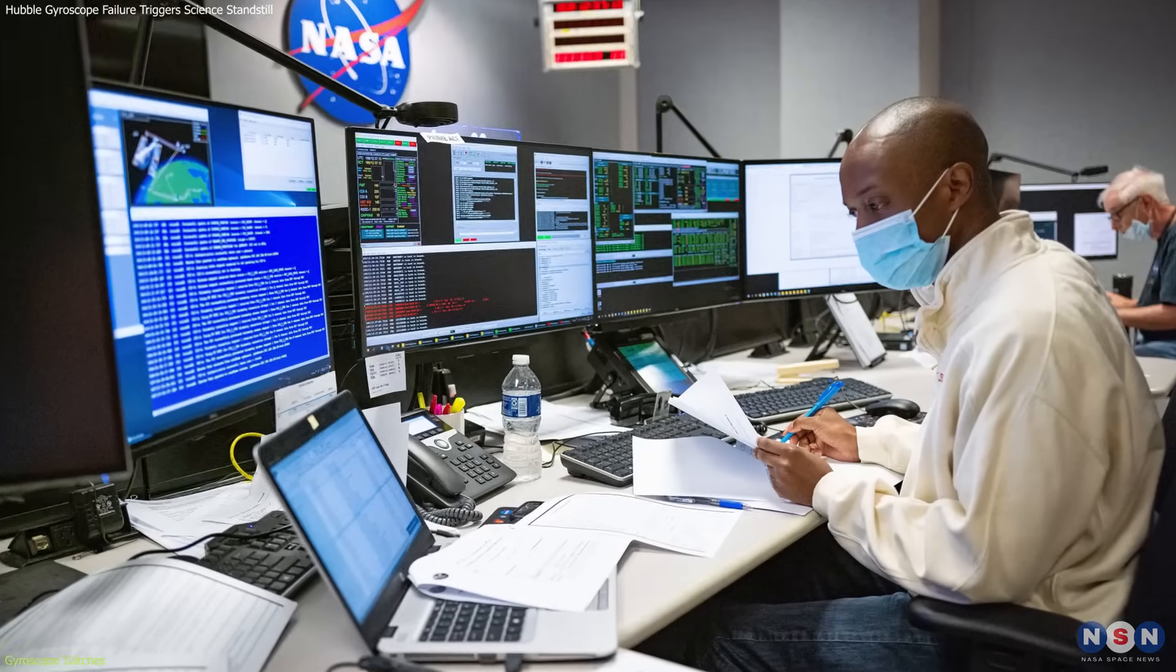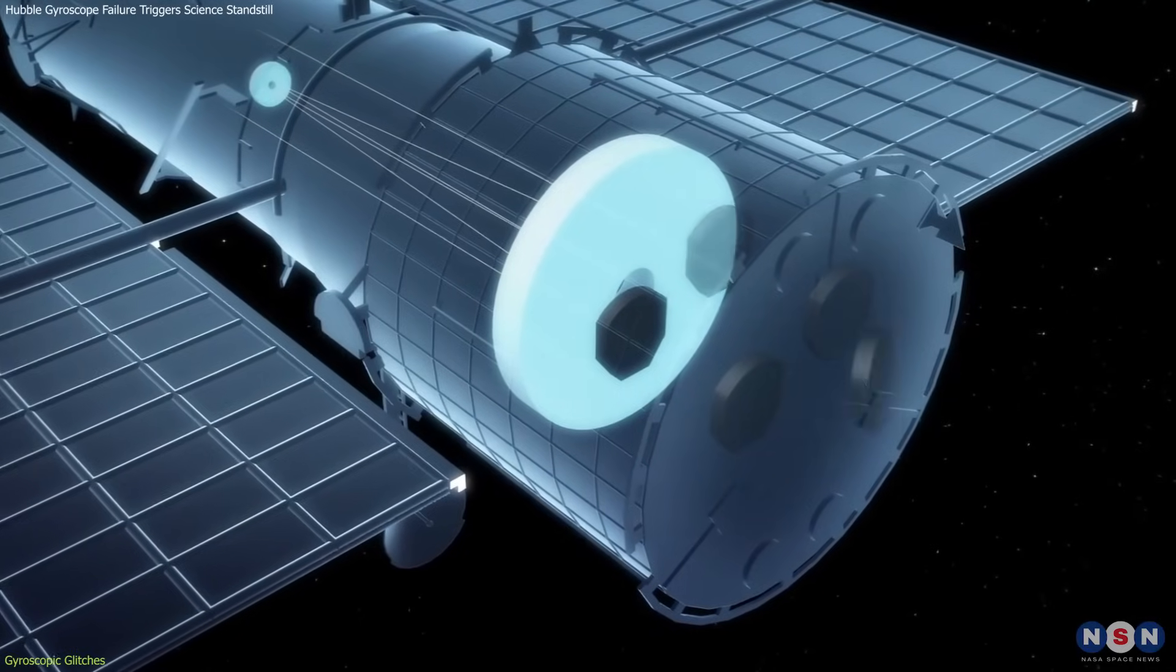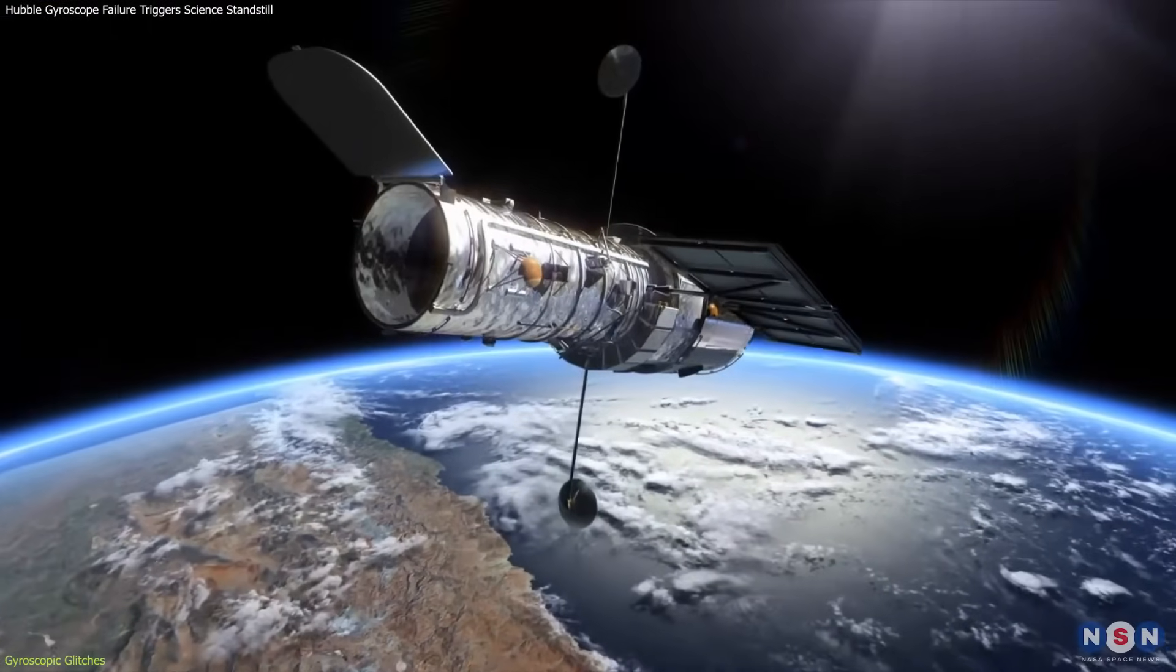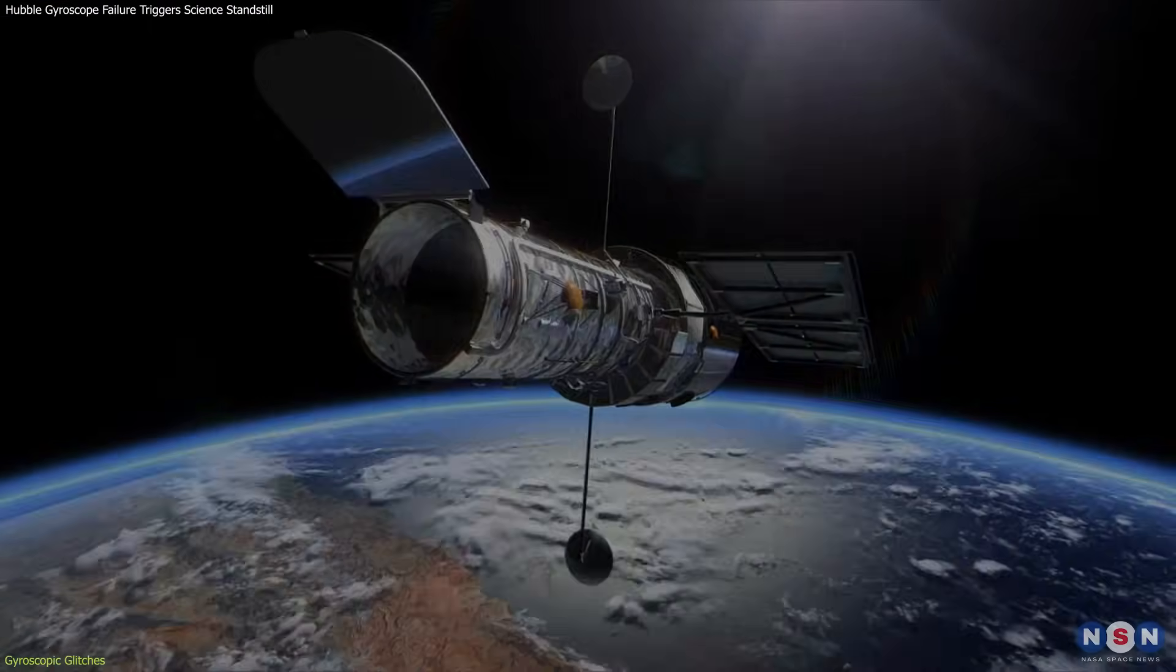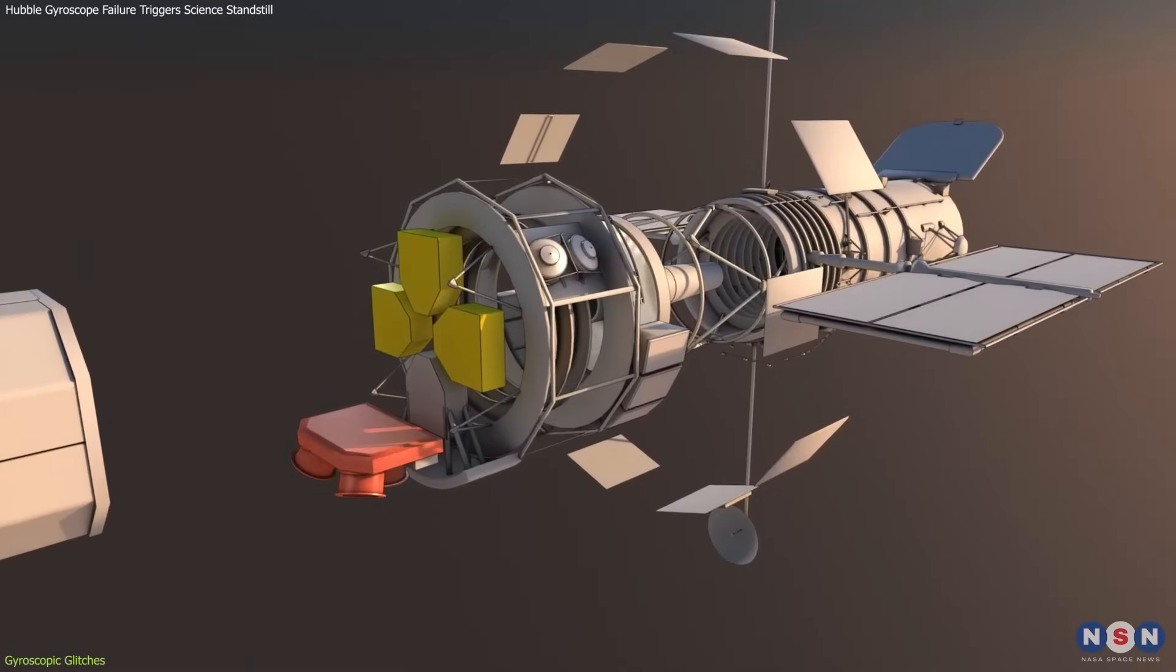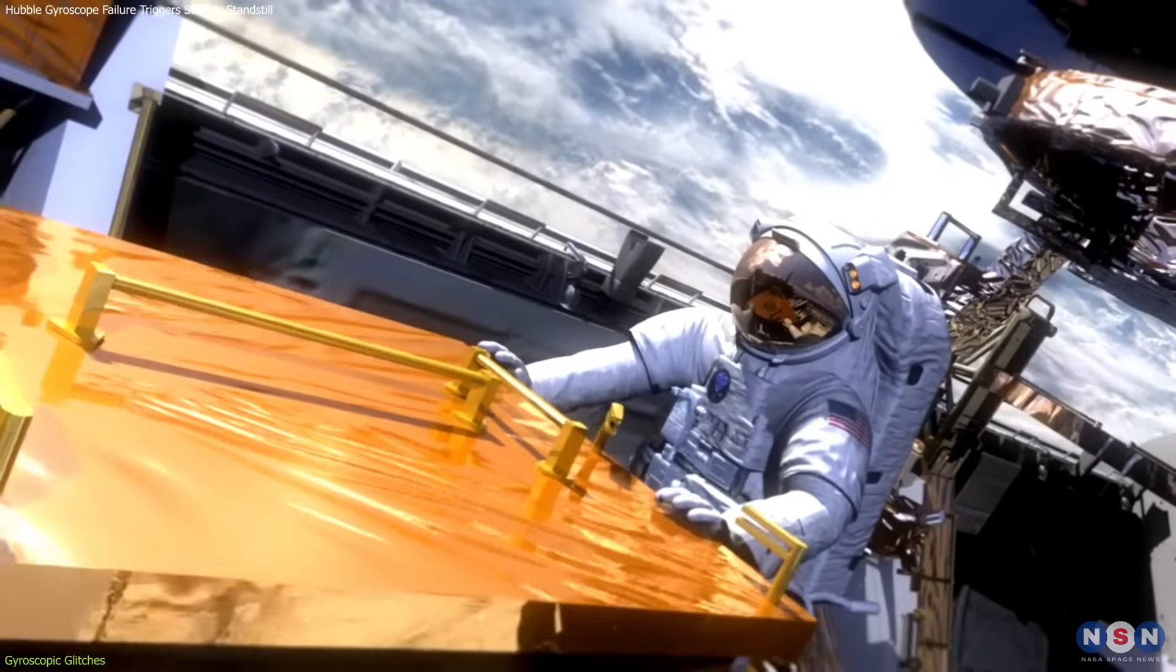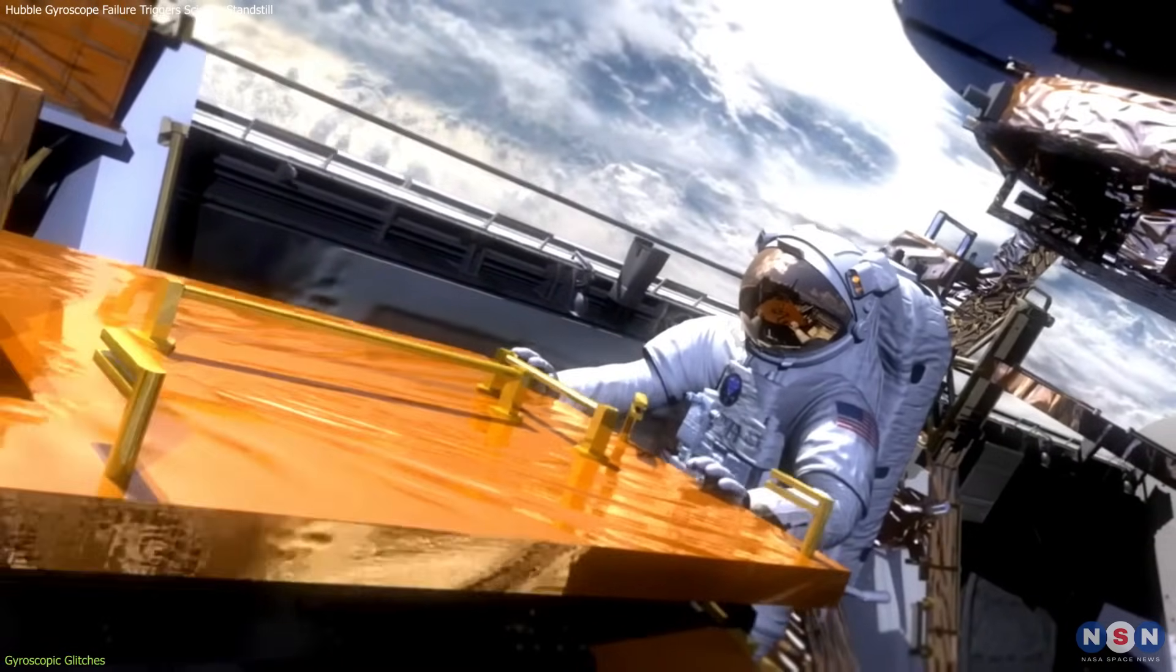NASA engineers are engaged in a complex troubleshooting process. Their first step involves switching to backup gyroscopes, assessing the malfunctioning unit's behavior, and attempting recalibrations. Each of these steps must be performed delicately to avoid exacerbating the issue, considering the limited opportunities for physical intervention given the cessation of the space shuttle program.